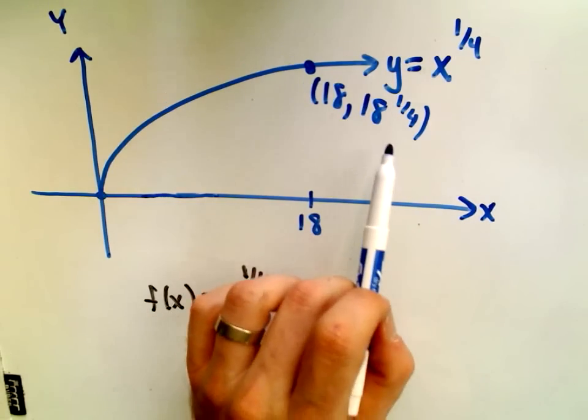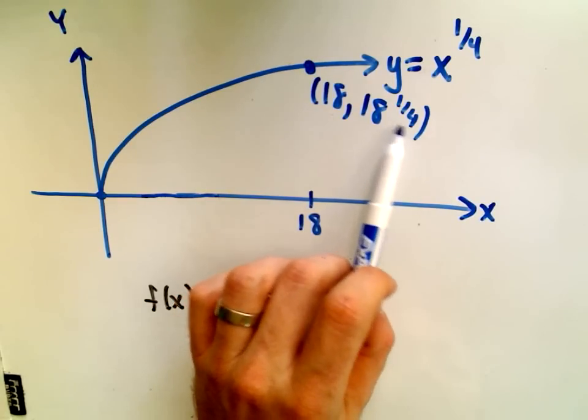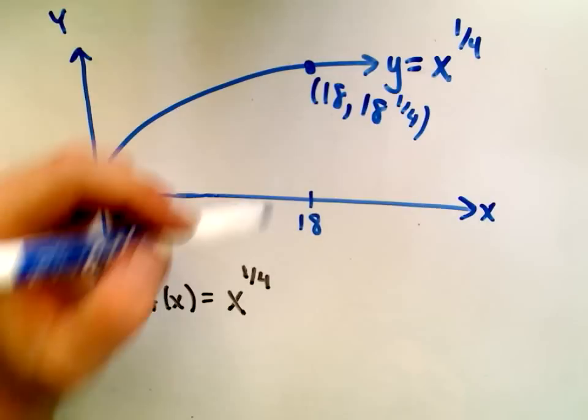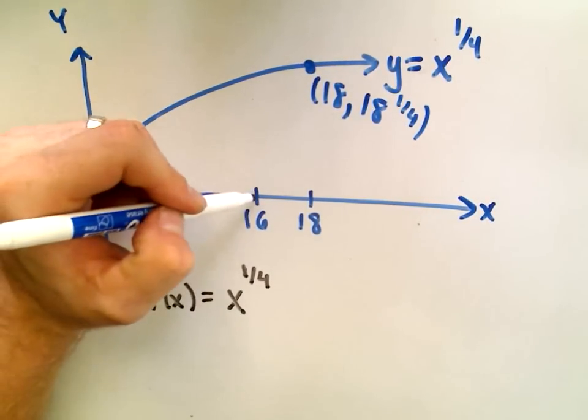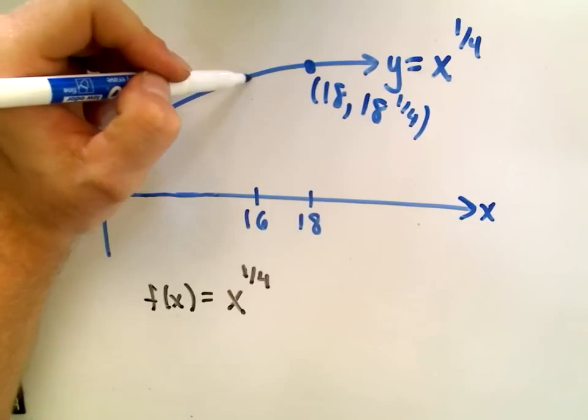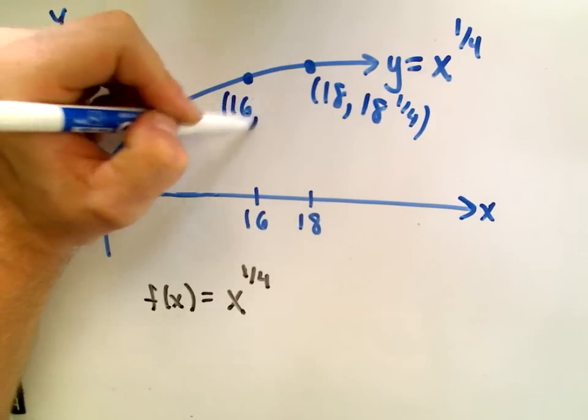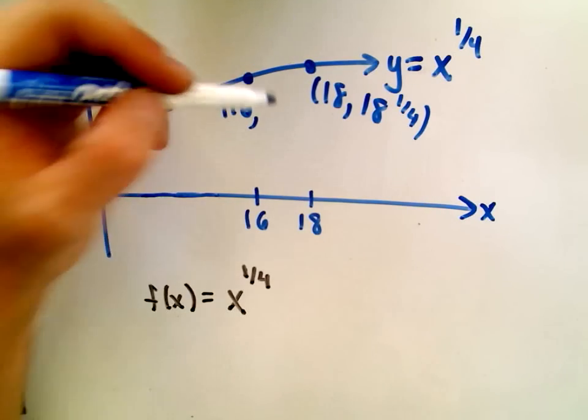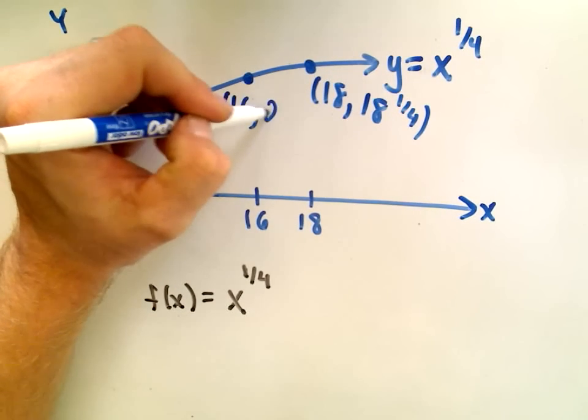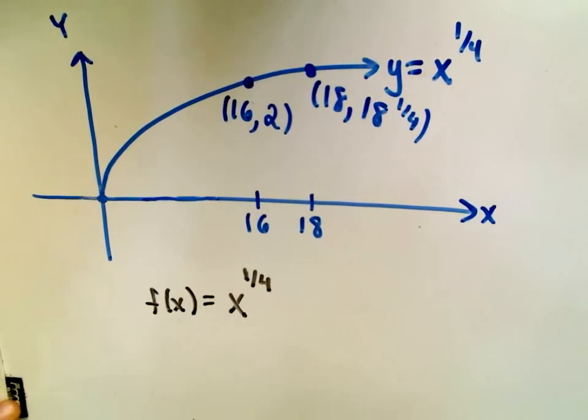What you try to do is pick a number close to 18 that you can take the 4th root of. I think a nice number that I can take the 4th root of easily would be 16. This is one part you'll have to think about. Whatever you're trying to do, you want to pick a number close to that that's easy to evaluate. So 16 to the 1/4 power would be 2.